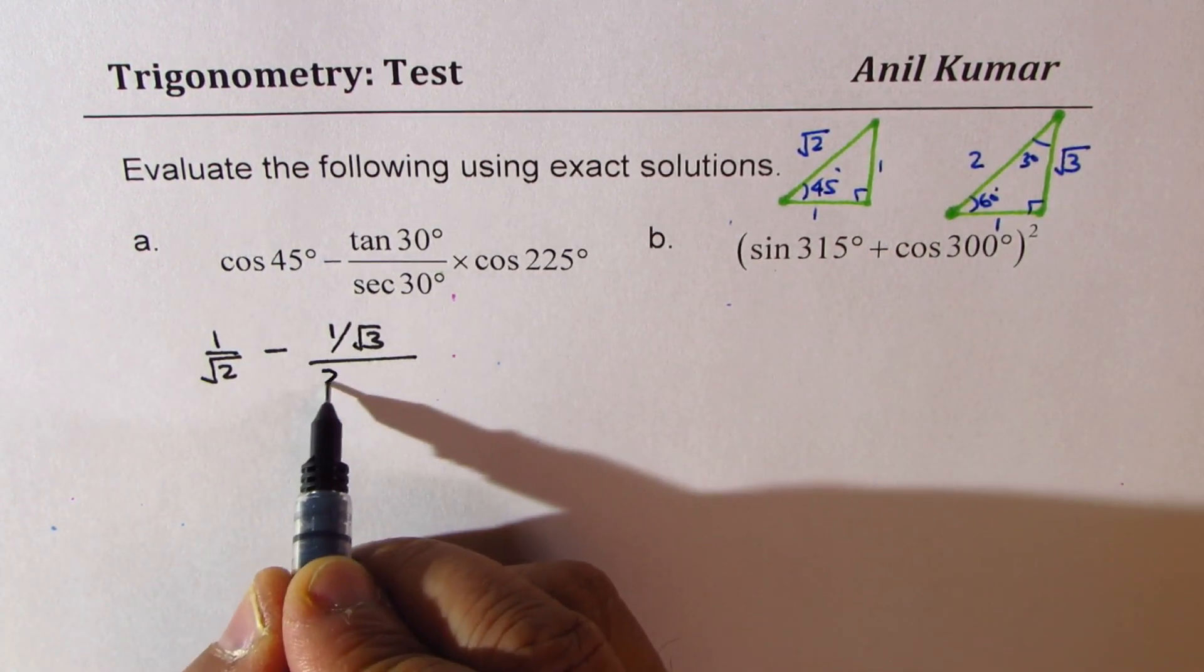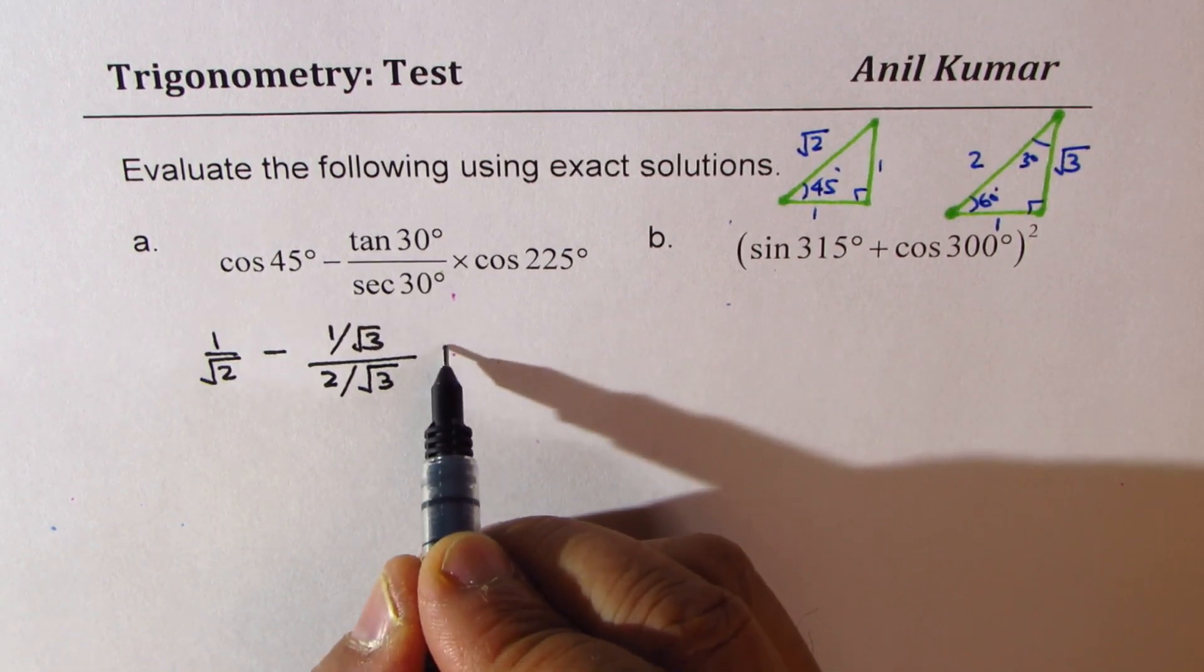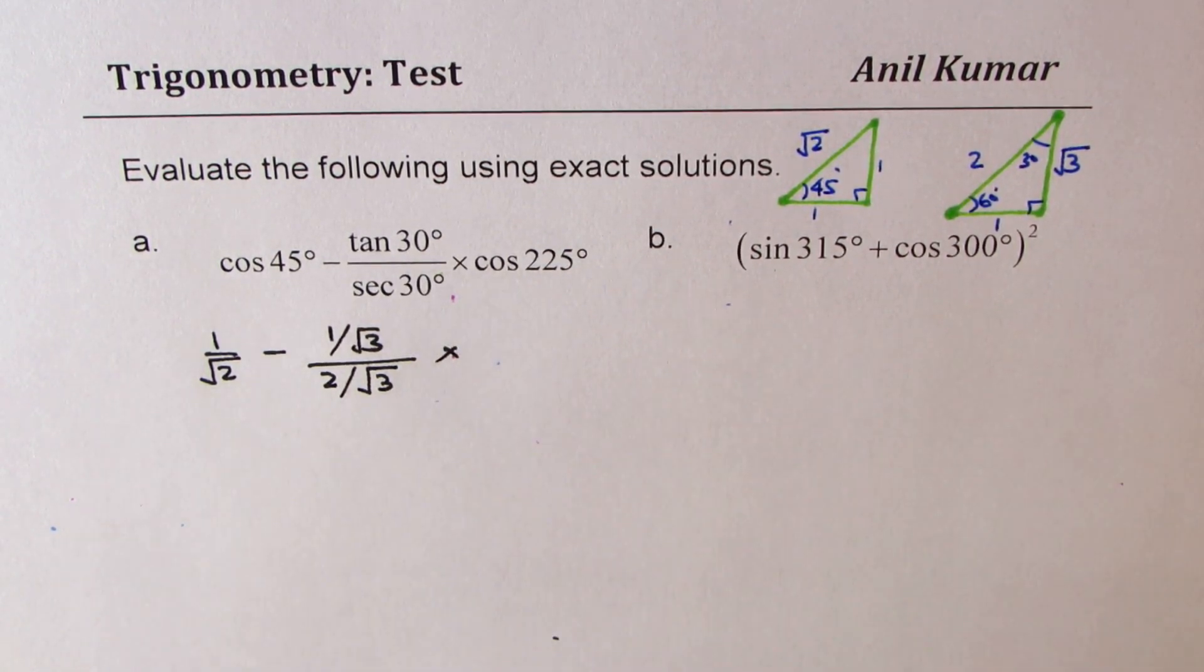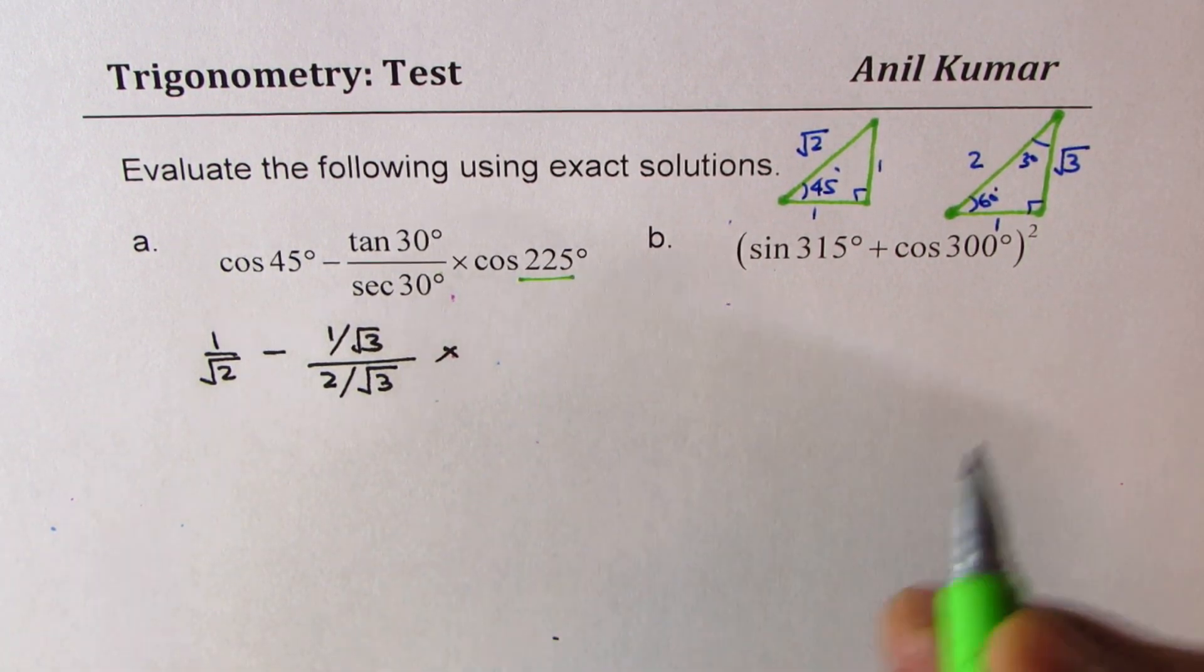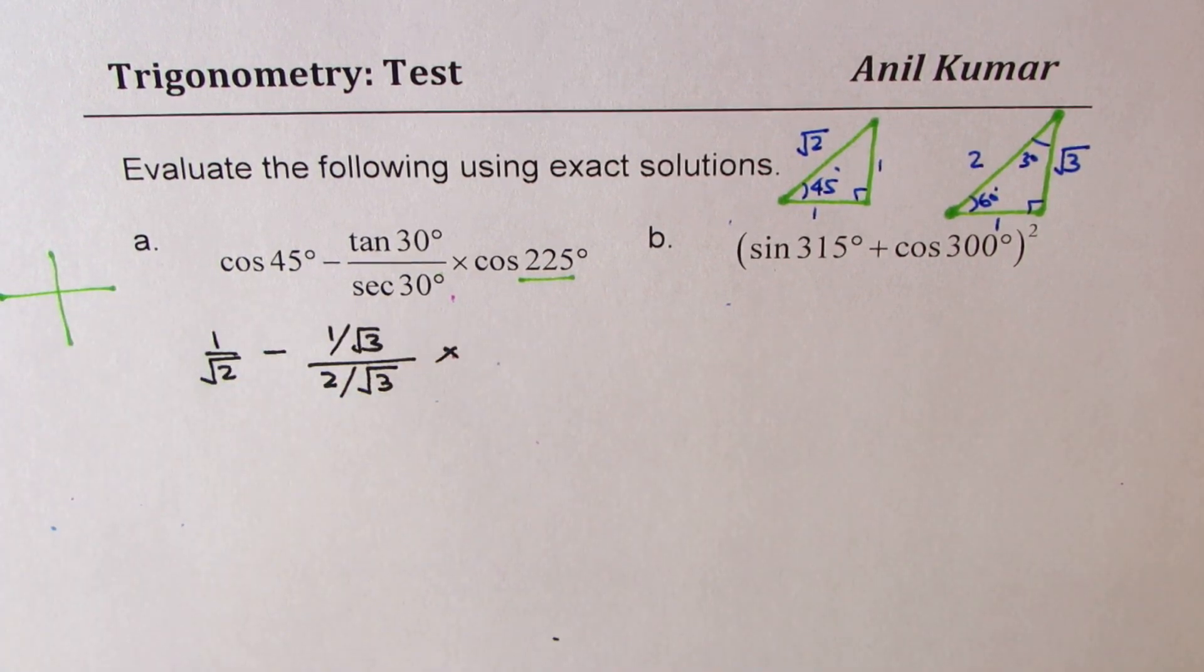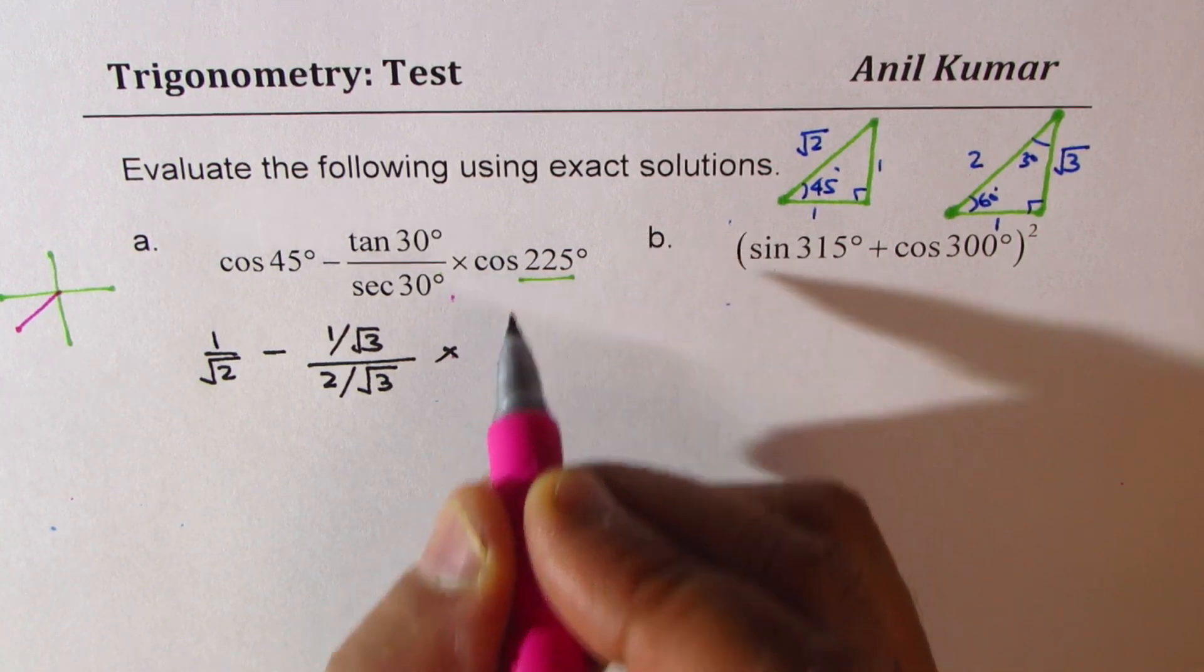So 30 secant will be 2 over square root 3, so write this as 2 over square root 3 times cos of 225 degrees. Now cos of 225 means we are in which quadrant? We are in quadrant 3, so this value has to be negative.